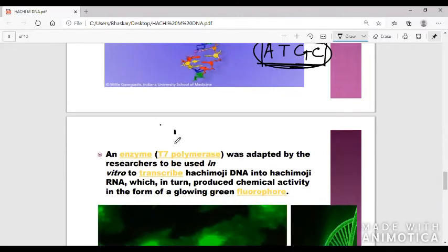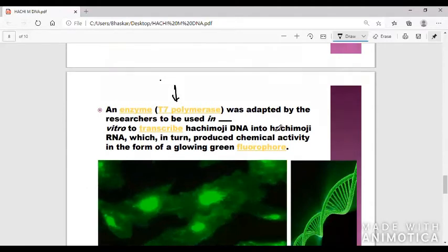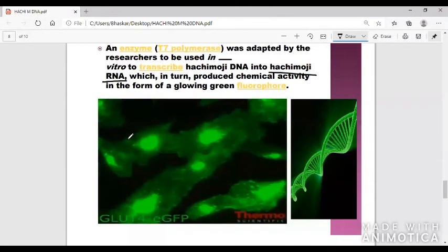An enzyme T7 polymerase was adopted by the research to be used in vitro to transcribe Hachimoji DNA into Hachimoji RNA. This is very important that it doesn't violate the law of central dogma, it obeys the central dogma. That means the DNA can create RNA, so Hachimoji DNA also can create Hachimoji RNA which in turn produces chemical activity in the form of glowing green fluorophore.